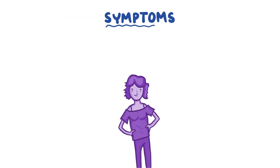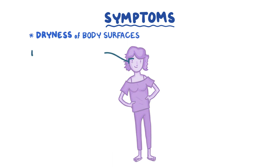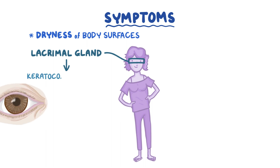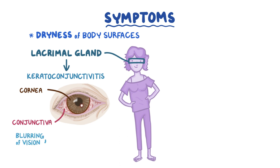Symptoms of Sjogren's syndrome usually present in middle-aged women and are due to dryness of various body surfaces. When the lacrimal gland is involved, it leads to keratoconjunctivitis, which is the inflammation and ulceration of the cornea and conjunctiva. This causes dryness of the eyes, leading to blurring of vision, itching, redness, and burning of the eyes.